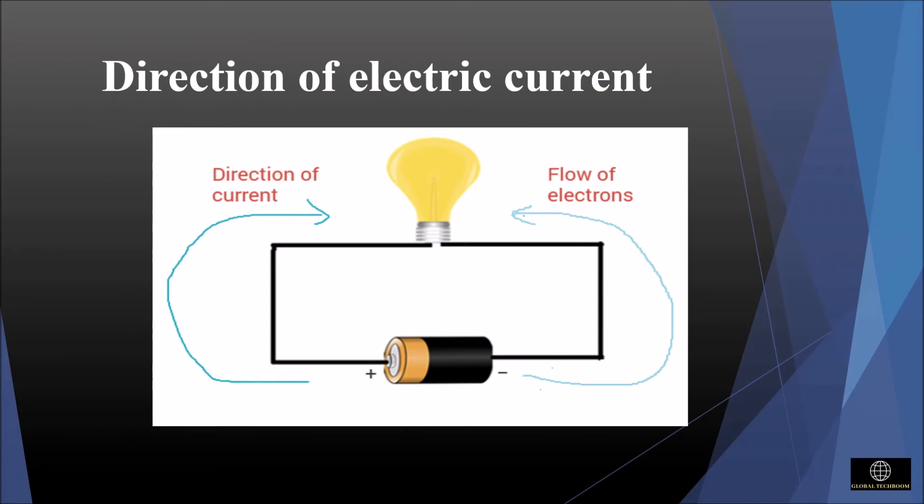Now let us learn about the direction of electric current. From the figure, when we connect the battery to a conductor, the electrons start moving from the negative terminal of the battery to the positive terminal. While the direction of the conventional current is from the positive terminal of the battery to the negative terminal.